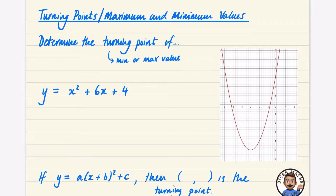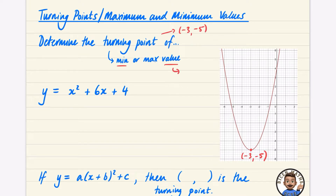Hopefully you remember from your work on quadratics that the turning point is just this bit down here. When we talk about the value, we're referring to the y-coordinate. At this point, the minimum value of y is minus 5. The turning point coordinate itself is (-3, -5), but the minimum value is just minus 5 — the y-coordinate of the function at that point.